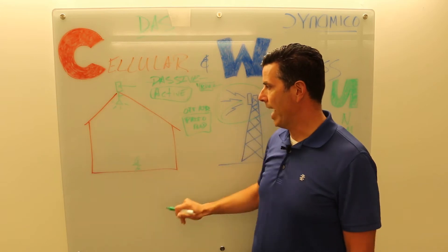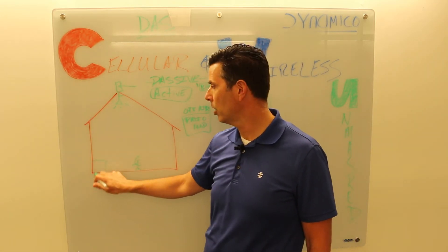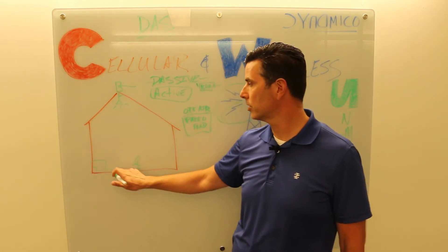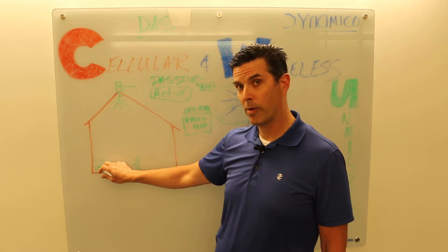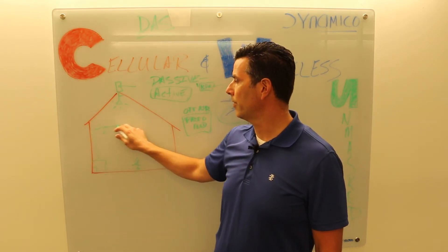So instead of repeating that signal inside the building, they actually have a small room, the DAS head end or the DAS hub, with radios provided by the cellular wireless providers. That signal gets generated here and gets distributed throughout the building via a network of antennas and/or remotes.